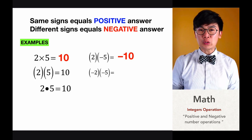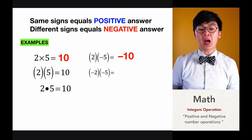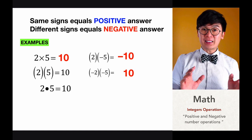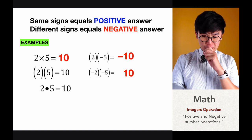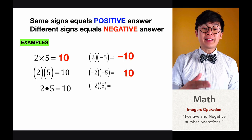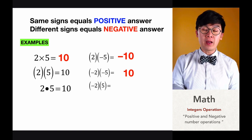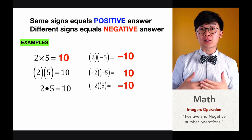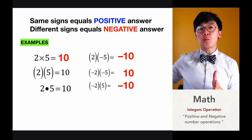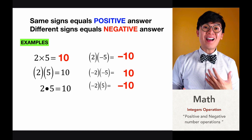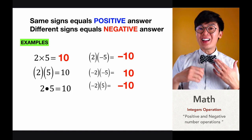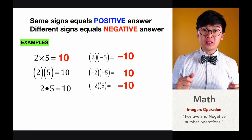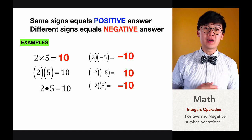If we have the same two numbers but both with negative signs — negative two times negative five — the product would be positive 10 because they have the same sign. And if we have negative two times positive five, the answer will be negative 10 because one of the values is negative. So those are the rules you need to use when multiplying two numbers. For three or more numbers, if you have an even number of negative signs, your product is positive; if you have an odd number of negative signs, your answer will be negative.